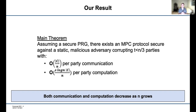Our main theorem says that, assuming a secure pseudorandom generator, there exists an MPC protocol that is secure against a static malicious adversary corrupting at most a third of the parties, and that has both communication and computation that decrease as N grows. In particular, the communication behaves as O(circuit size / N), while the computation grows as O(S log N / N) times the circuit size, where S is a statistical security parameter.